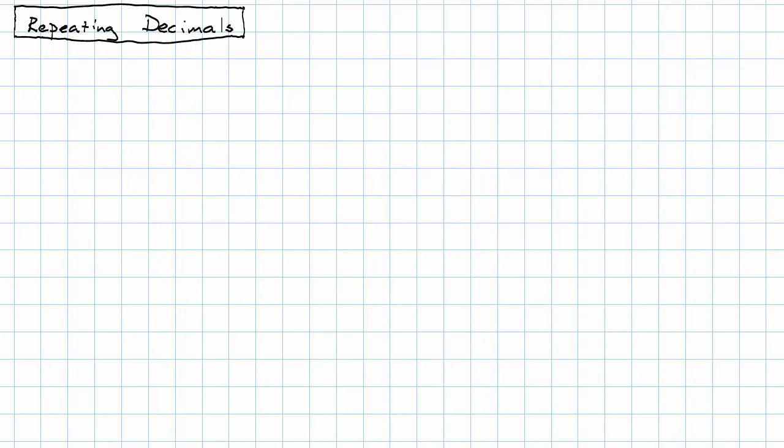Strange things happen when we do division with decimals. One of the strangest is that sometimes the division just doesn't stop. Let me show you an example, and then we'll see what's happening with this phenomenon.